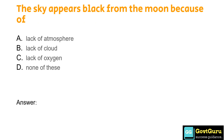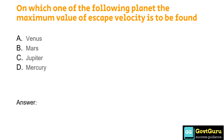The sky appears black from the moon because of: Option A: lack of atmosphere, Option B: black clouds, Option C: lack of oxygen, Option D: none of these. The answer is Option A, lack of atmosphere. On which of the following planets is the maximum value of escape velocity found? Option A: Venus, Option B: Mars, Option C: Jupiter, Option D: Mercury. The answer is Option C, Jupiter.